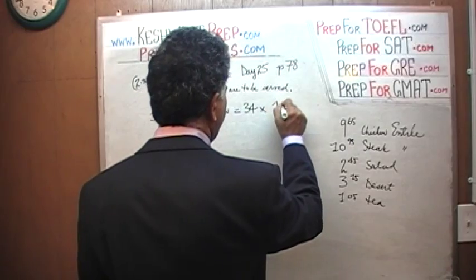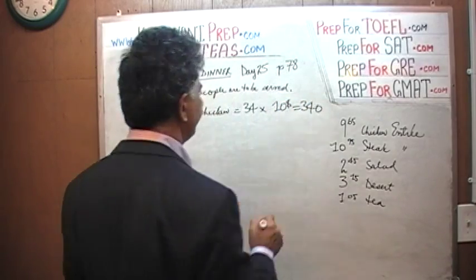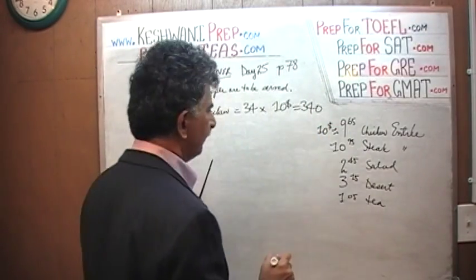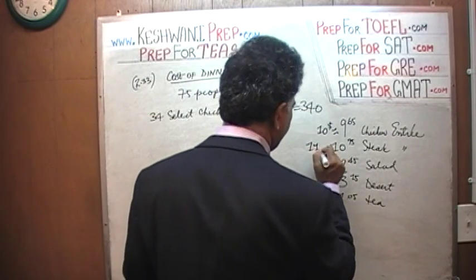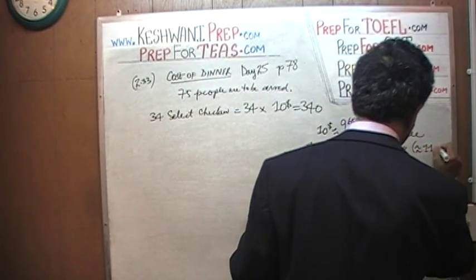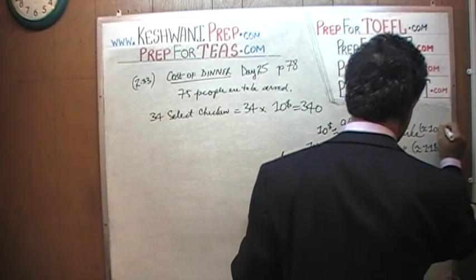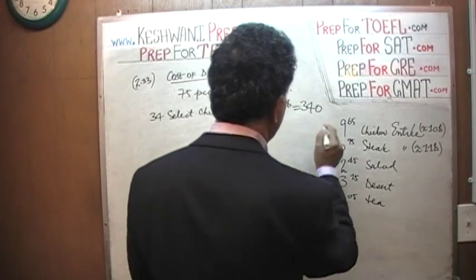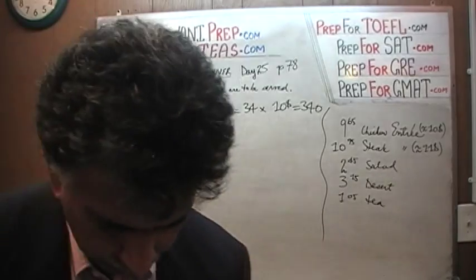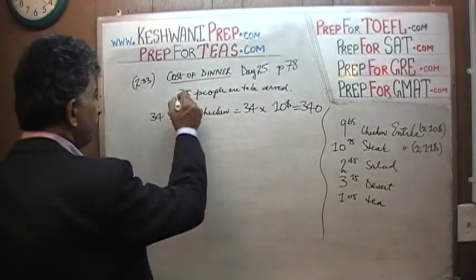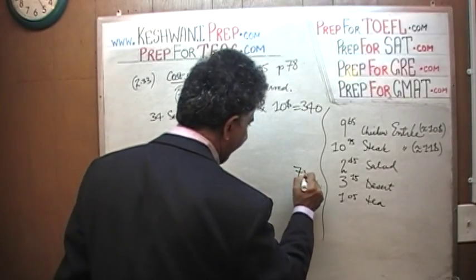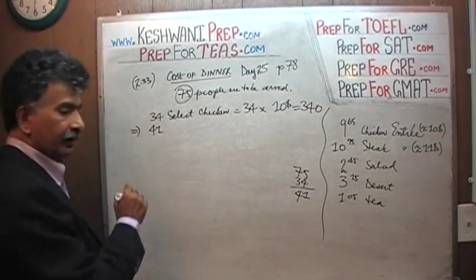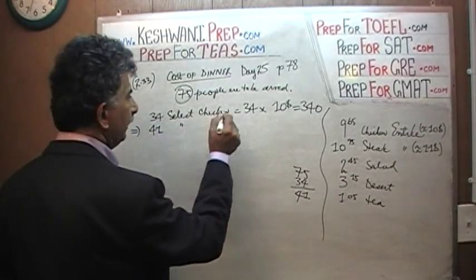Let's just pretend chicken is $10. So that's $10 times 34, which is $340. We are approximating $9.65 as $10. Similarly, the steak we are going to approximate as $11. So if there are 75 people and 34 selected chicken, then 75 minus 34 is 41 — that means 41 must have selected the steak.